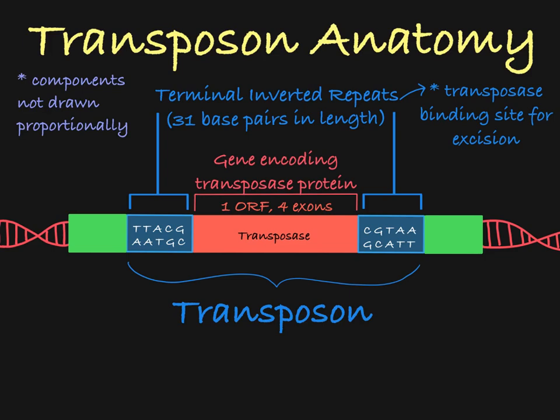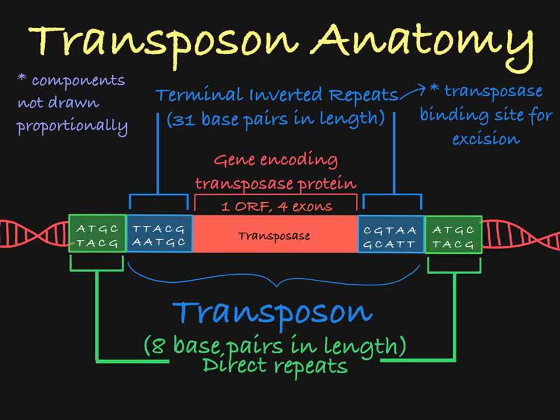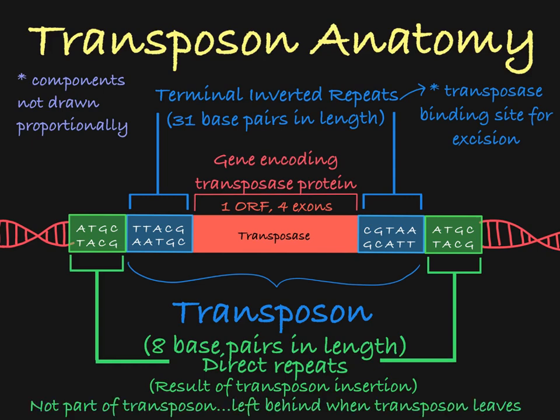Transposase requires the presence of these specific sequences to cleanly cut the transposon out of its initial host site. You will also notice that a transposon is flanked by direct repeats, which are a result of the insertion of the transposon into the DNA. These direct repeats are not part of the transposon, and they are left behind when the transposon leaves this site of the DNA.